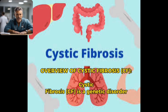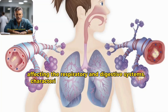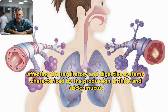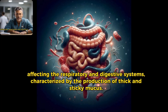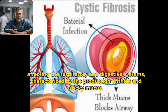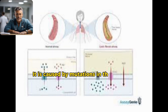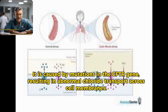Overview of cystic fibrosis (CF). Cystic fibrosis is a genetic disorder affecting the respiratory and digestive systems, characterized by the production of thick and sticky mucus. It is caused by mutations in the CFTR gene, resulting in abnormal chloride transport across cell membranes.